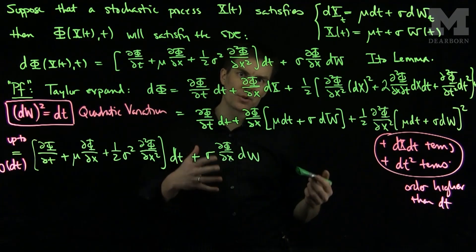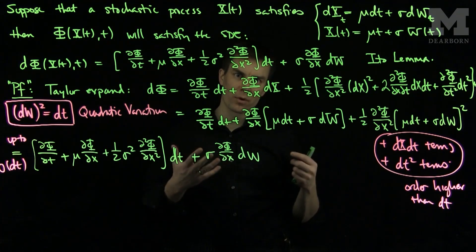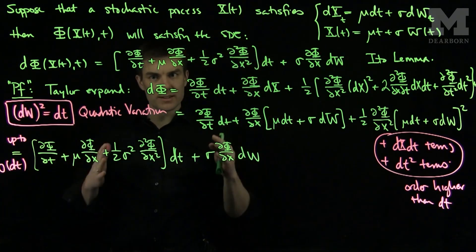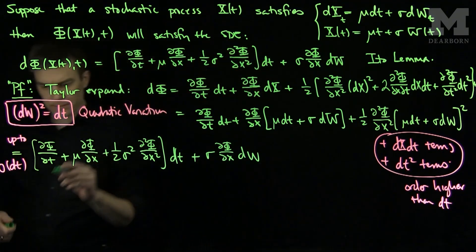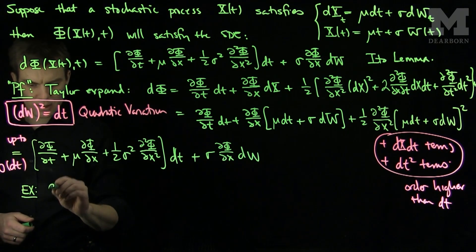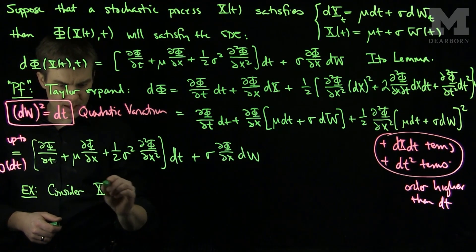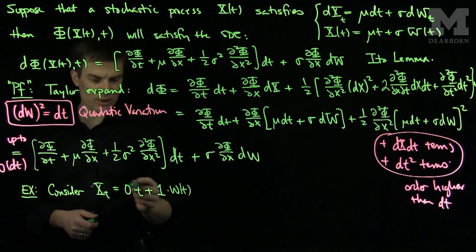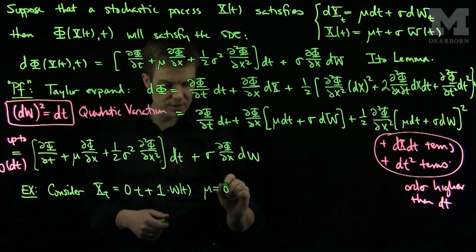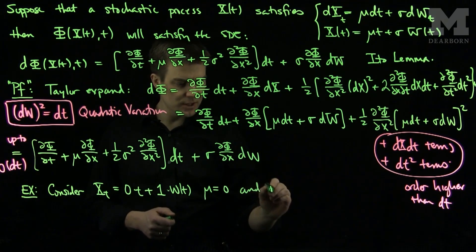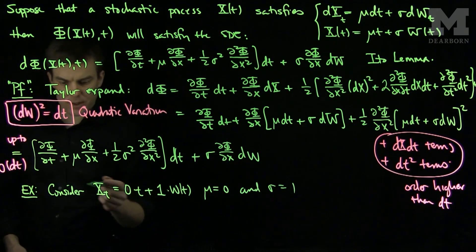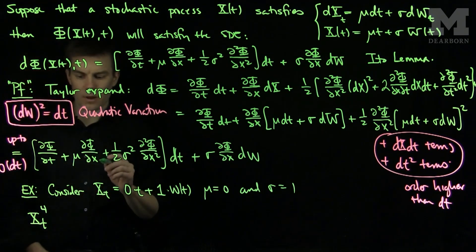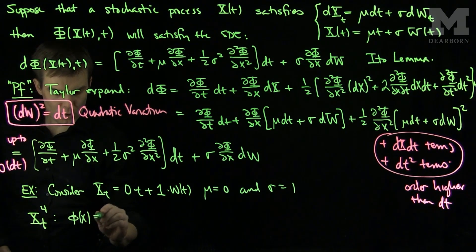So, concisely, the Itô Lemma says that up to terms that are higher than order dt, so terms of the form dt or dt^(3/2) or dt², we disregard all those with respect to the ordinary differential, and we keep the terms that have order dt or lower. Now, to see an example of this, we consider x(t) which is 0·t + 1·w_t. So our x(t) is just going to be Brownian motion. So in the Itô formula, μ = 0 and σ = 1. And if we consider x(t)^4, our function φ in this case will be x^4.